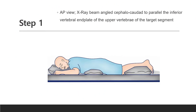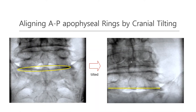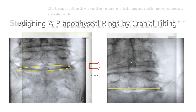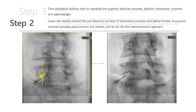I prefer to use AP and oblique SIAM image guiding technique to reduce radiation hazard and save procedure time. Good practice depends on high definition of SIAM image. In front position, set the SIAM on AP view. There are many variations of lumbar curvature and individual segmental vertebra. Set and tilt the X-ray beam in the cranial or caudal direction to parallel the inferior vertebral endplate of the upper vertebra of the target segment. For example, for targeting the L5 nerve root, tilt cranially to align the L5 inferior endplate. Step 2: give ipsilateral oblique view to visualize the pedicle, superior articular process, transverse process, junction of superior articular process and transverse process, and safe triangle. Advance the needle until it hits the intertransverse ligament.